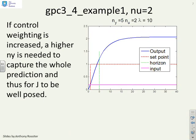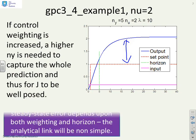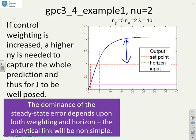Now what we've done in this one is we've decided to change lambda. You'll see we've now made lambda equal to 10. And what impact has that had? You've got a hugely different steady state error. So your predictions are now much worse than they were before. That's an interesting observation — changing the weighting actually changes whether or not your horizons are good or poor. So the dominance of the steady state error depends upon both the weighting and the horizon.